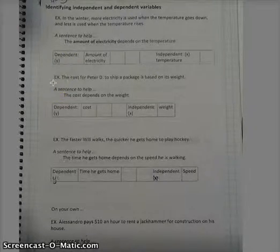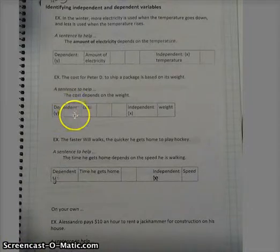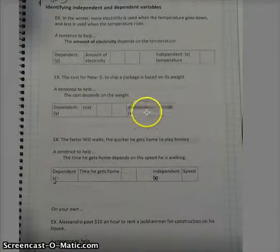Down here we have: the cost for Peter to ship a package is based on its weight. The sentence to help: the cost depends on the weight. And so we have cost as the dependent and weight as the independent.